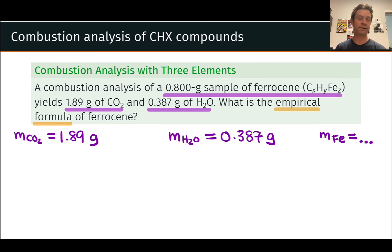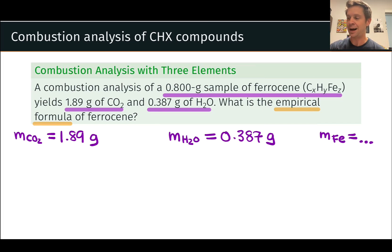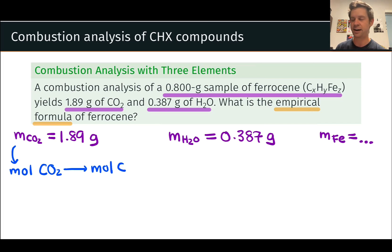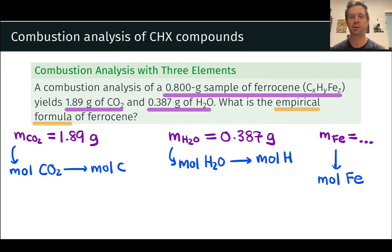Let's list what we know. We've got the mass of carbon dioxide produced in the combustion — 1.89 grams — and the mass of water produced — 0.387 grams. The mass of iron we don't know yet, but that's a quantity we'll want to determine. To get to the empirical formula, we need the moles of carbon, hydrogen, and iron. We find moles of carbon from moles of CO2, and moles of hydrogen from moles of H2O, since carbon goes entirely into CO2 and hydrogen entirely into H2O. If we knew the mass of iron, we could convert to moles using the average atomic weight from the periodic table.